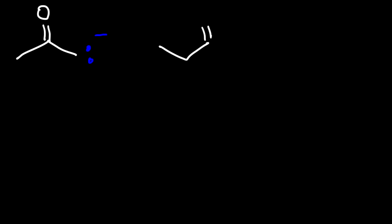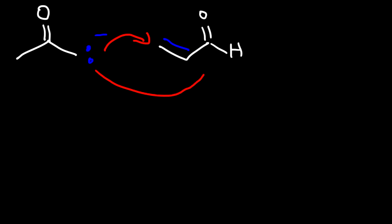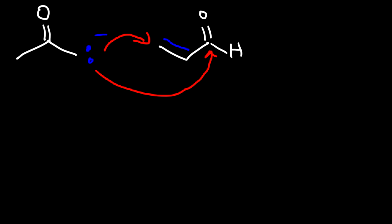Here's a question: can this enolate ion serve as a Michael donor? If it attacks the beta carbon, that leads to the Michael reaction; if it attacks the carbonyl carbon, it does not. This enolate ion turns out not to be a very good Michael donor. While it can attack the beta carbon, it prefers to attack the carbonyl carbon because it is a relatively strong base. The two sites compete, so the yield for the Michael reaction is poor with this type of enolate.